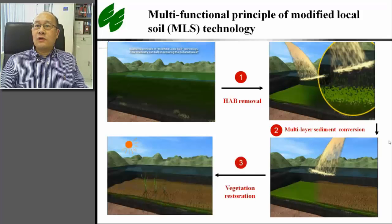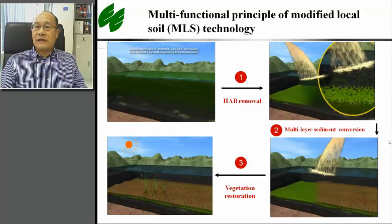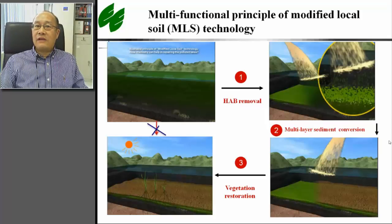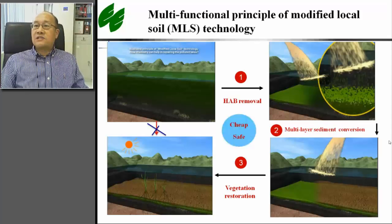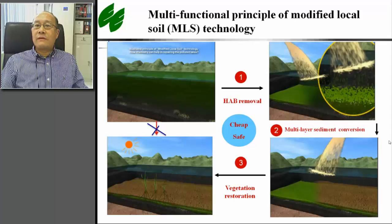The capping layer also contains native macrophyte seeds, which can grow and utilize nutrients that come from the decomposition of the buried algal flocs in the sediment in shallow water systems. The restoration of submerged vegetation cannot happen in heavily eutrophic systems, but it may be quickly restored after the water and sediment environment are improved.